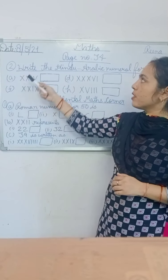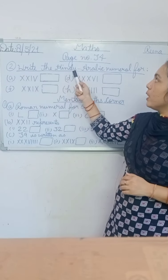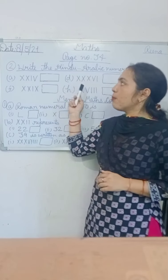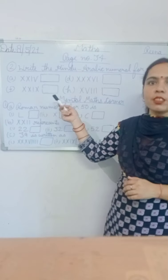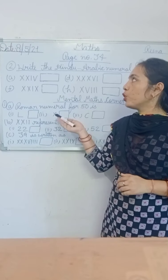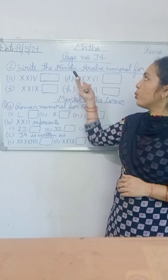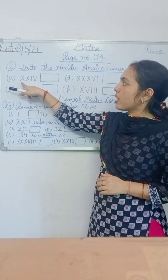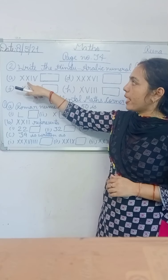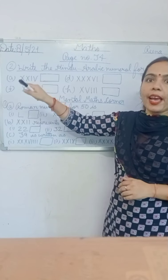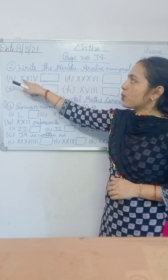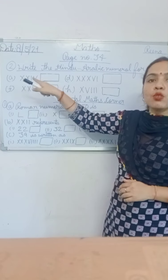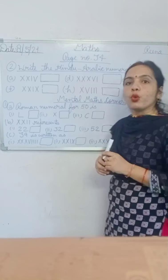Question number 2 says: write the Hindu Arabic numeral. That means you have been given some Roman numbers and you need to convert them to Hindu Arabic numerals. First, part A is XXIV. XXIV means X plus X is 20, and IV means 4 — that means 24.